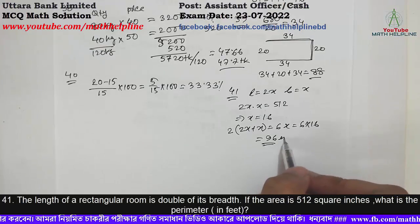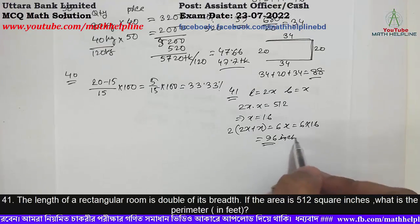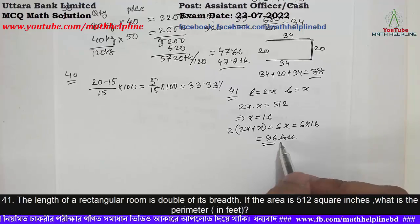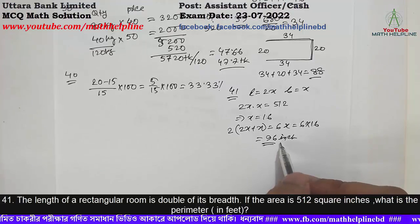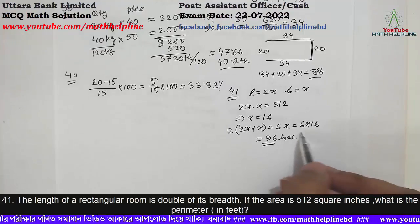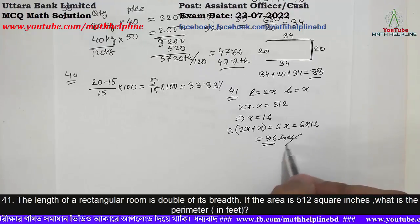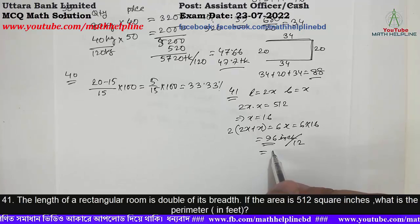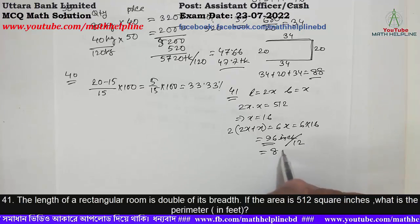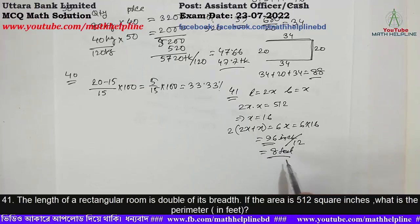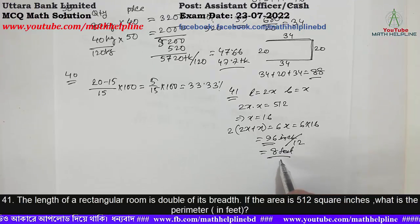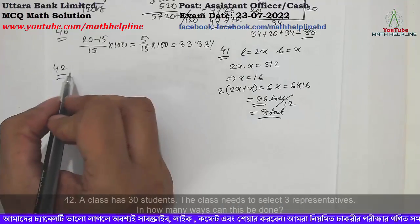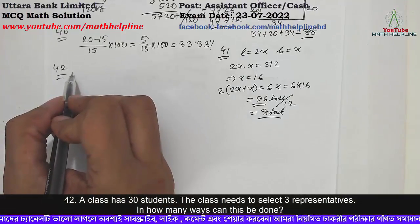The area is 1 inch. The area is 8 feet. Perimeter — problem number 42.